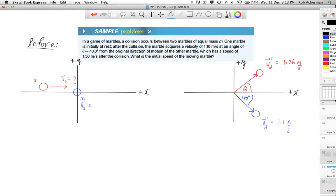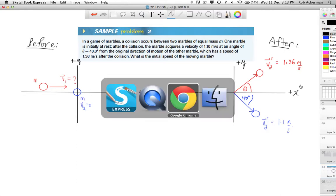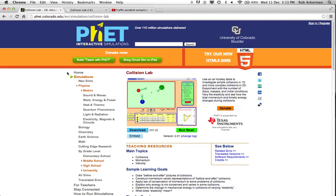The velocity of the originally inbound marble is 1.36, but we don't know its angle. In fact, you might be wondering, how do I know whether it's moving at an angle to the x-axis or not? Well, in order to see why this is in fact a reasonable depiction of the after image, I'd like you to go to our friends at PhET.